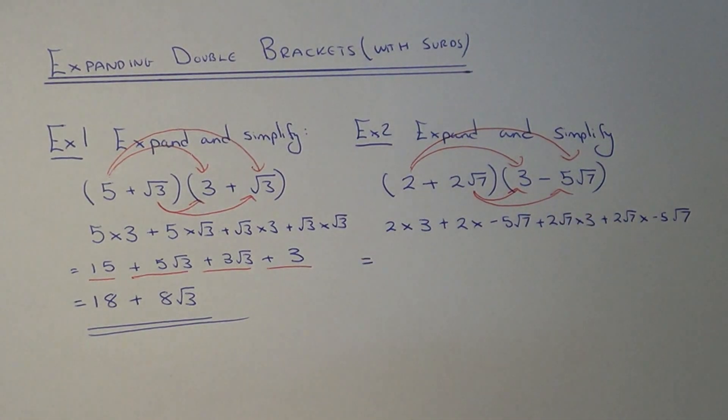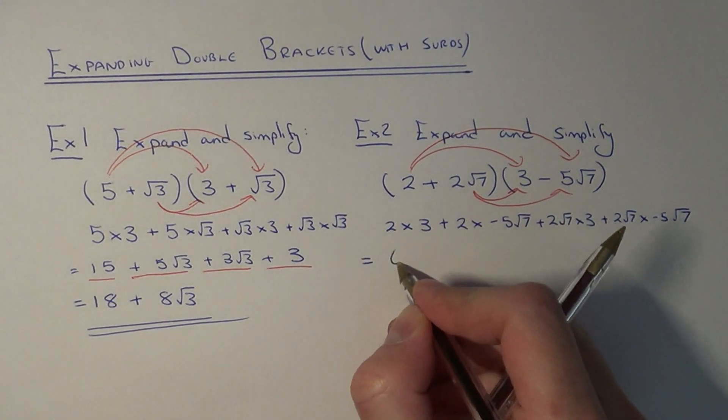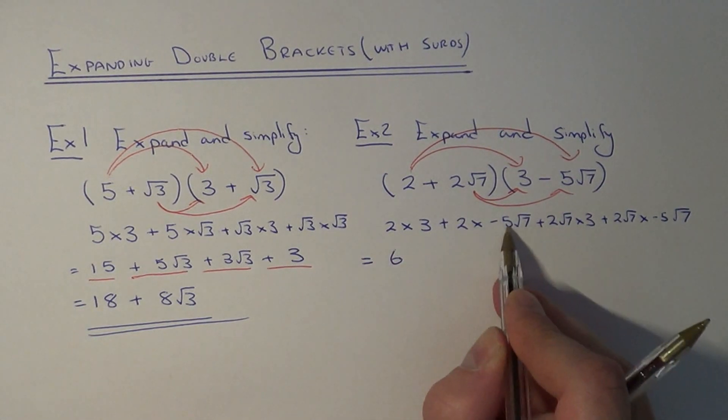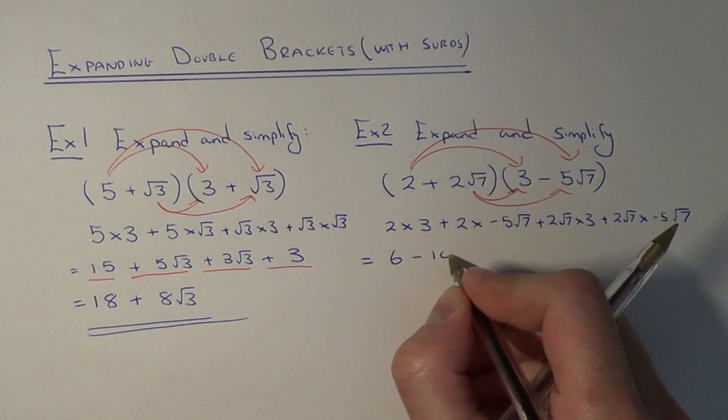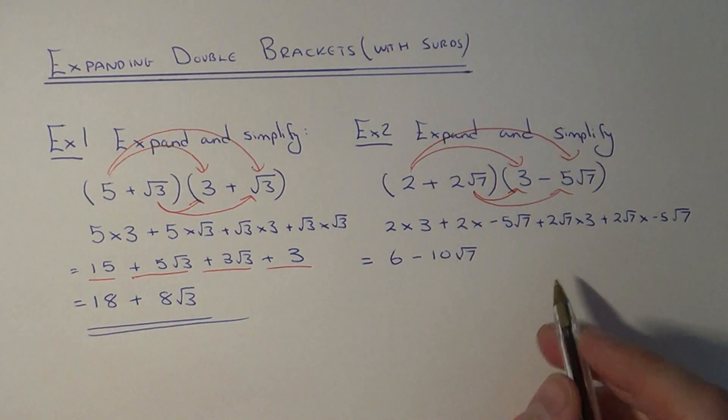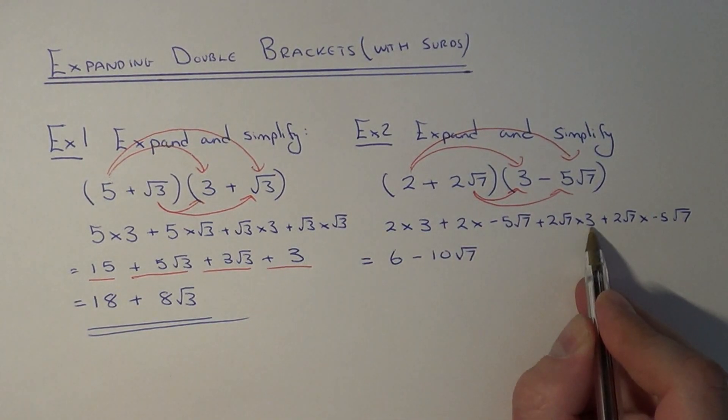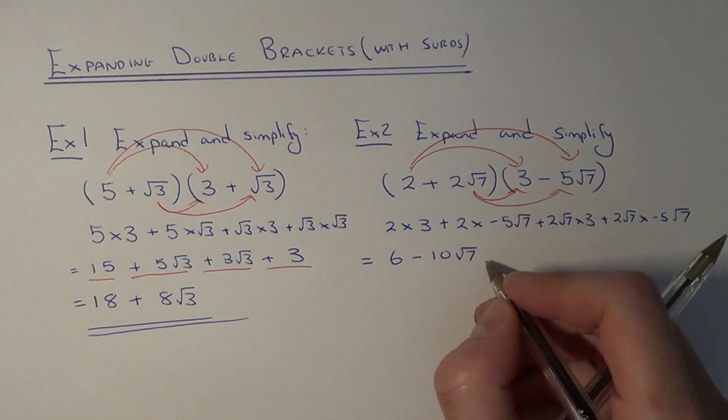So if we just simplify this, 2 times 3 is 6. 2 times minus 5 root 7 would be minus 10 root 7. 2 root 7 times 3 would be 6 root 7.